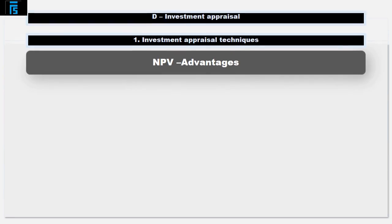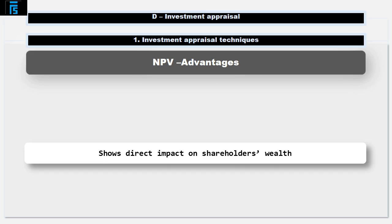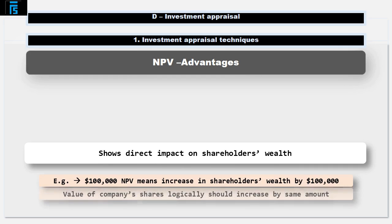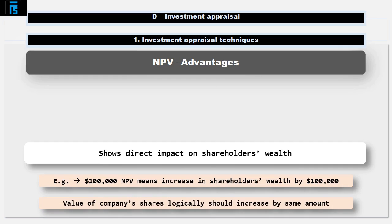NPV has much to commend it as a technique. First and foremost, it gives a direct answer to the question: what will be the impact on shareholder wealth if I take this project on? For example, an NPV of positive $100,000 means that if that project is taken on, shareholder wealth will be increased by $100,000 in today's terms. The value of the company's shares logically should increase by this amount in total.